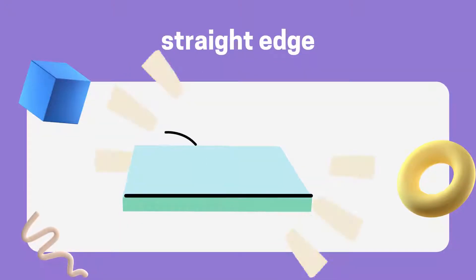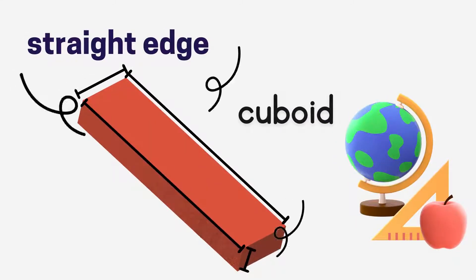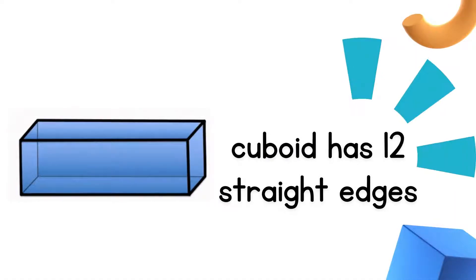First is straight edge. Say with me. Straight edge. Good job! These are the straight edges of a cuboid. These are the straight edges of a cuboid. A cuboid has 12 straight edges. Cuboid has 12 straight edges.